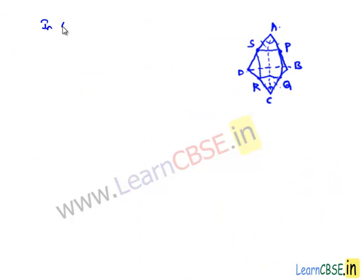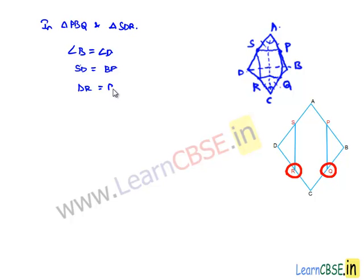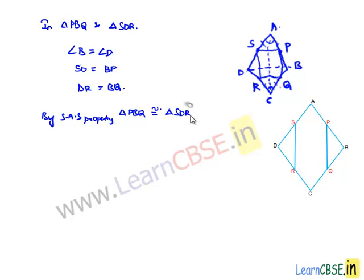Similarly, let us consider triangle PBQ and triangle SDR. In these two triangles, angle B is equal to angle D since ABCD is a rhombus and opposite angles in a rhombus are equal. Here SD is equal to BP since S is the midpoint of AD and P is the midpoint of AB, and we know that AD is equal to AB. Similarly we get DR is equal to BQ. Now again by SAS property, triangle PBQ is congruent to triangle SDR. As the two triangles are congruent, their corresponding sides and corresponding angles can be equated. So SR is equal to PQ.